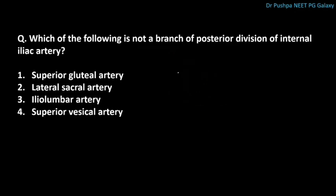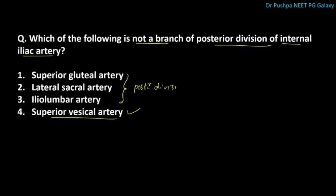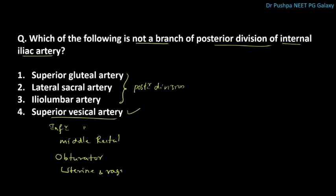Which of the following is not a branch of the posterior division of the internal iliac artery? The correct answer is the superior vesicle artery, which is a branch of the anterior division. The branches of the anterior division include: superior vesicle artery, inferior vesicle artery, middle rectal artery, obturator artery, uterine and vaginal artery, inferior gluteal artery, and internal pudendal artery.